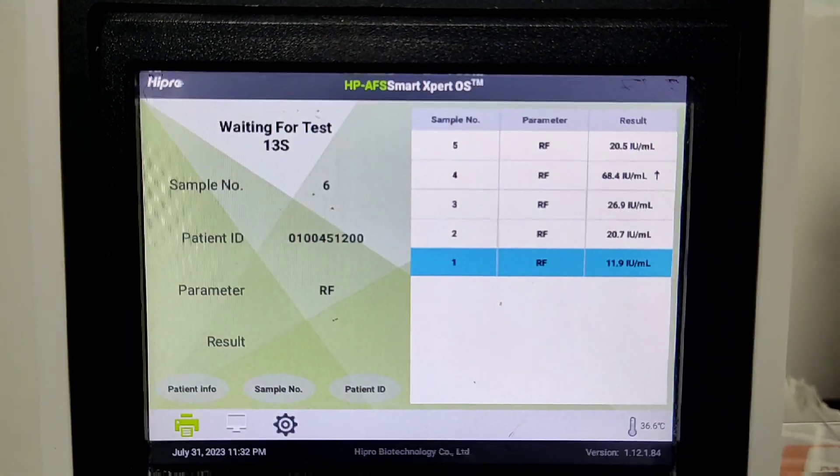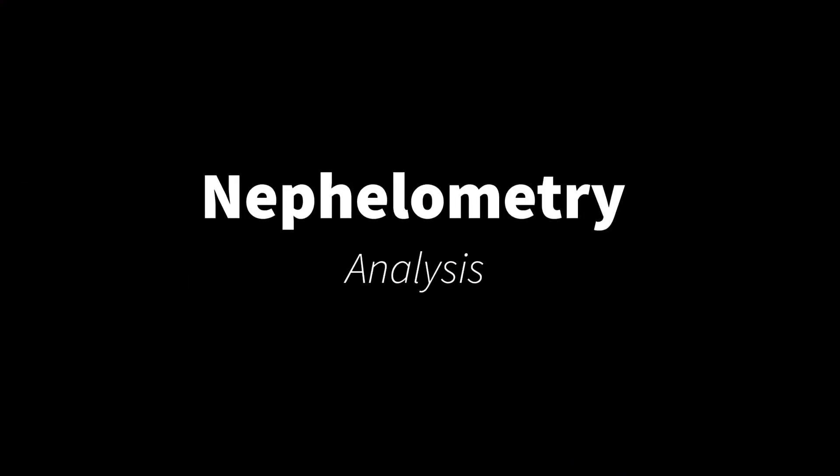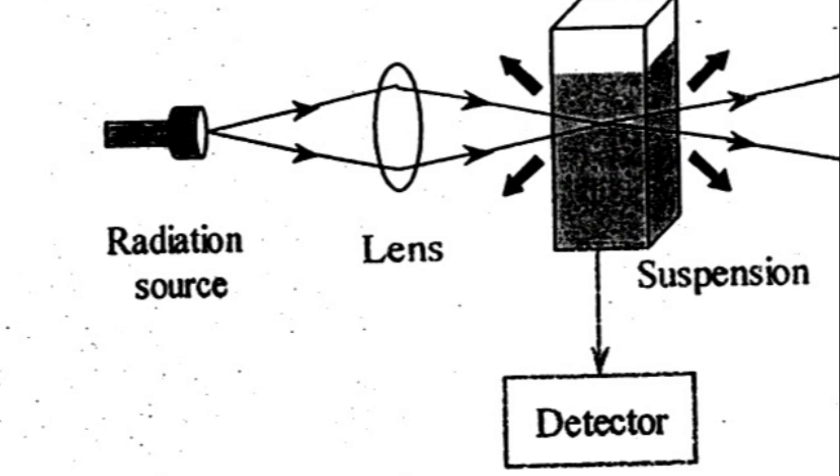For this we have the normal range 0 to 30 international unit per milliliter. In terms of analysis it is entirely nephalometry, with analyzer providing us with the value by measuring the intensity of scattered light.